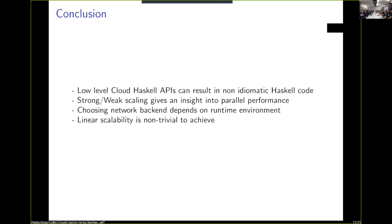Basically, depending on the level of API you want to work with, your code doesn't look too functional. Strong and weak scaling can give you an idea of performance. Choosing the backend will depend on where you're going to try to run it. Linear scalability is obviously a trivial goal to achieve. If you guys have any questions, I have about one minute left.